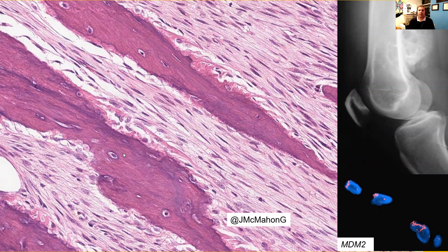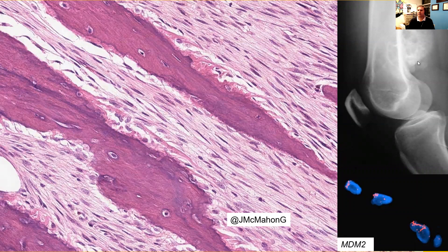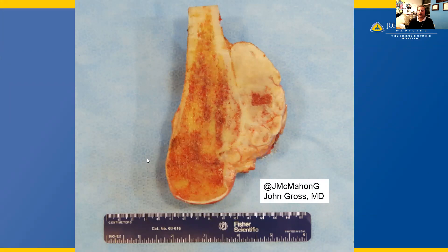Here's a high-power view of these parallel trabeculae of bone lacking osteoblastic rimming in these bland fibroblastic spindle cells. They may have variable mitotic activity, but the mitotic activity is generally quite low. And here's an example from a different patient with parosteal osteosarcoma — in the top right, an example of what MDM2 FISH gene amplification looks like. Finally, here's one more photo of a different patient with the same diagnosis of parosteal osteosarcoma seen recently at Johns Hopkins University. Thank you.